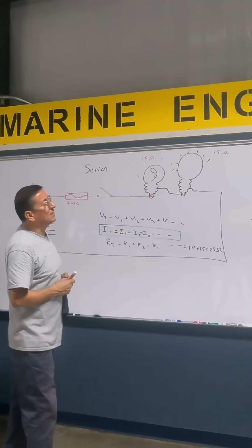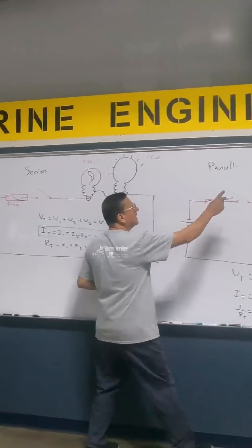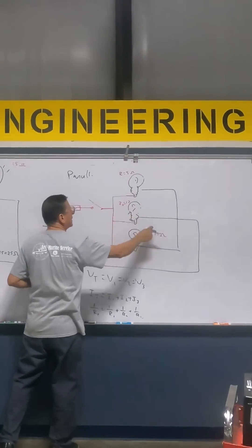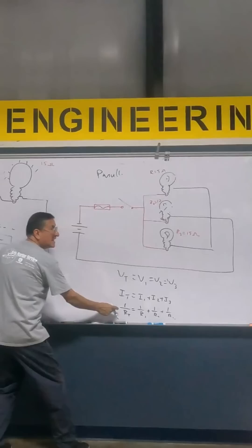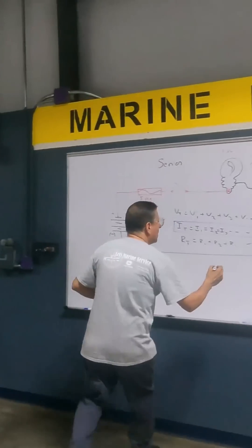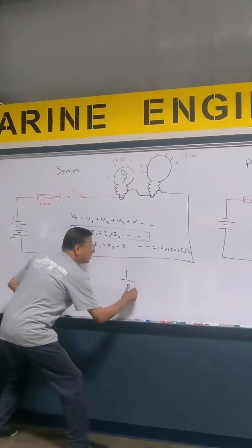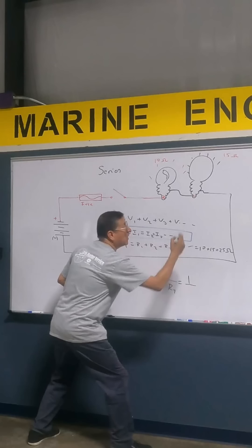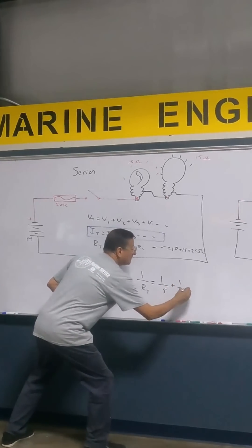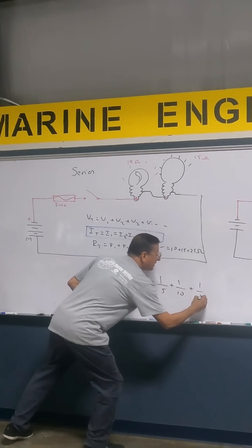How much is the total resistance of the parallel circuit? Look, one is 5, the other one is 10, and the other one is 15. Total resistance. Look at this. 1 divided by the total is equal to 1 divided by 5, plus 1 divided by 10, plus 1 divided by 15.